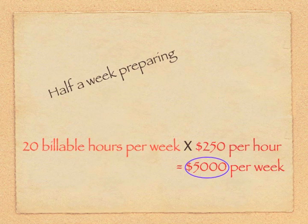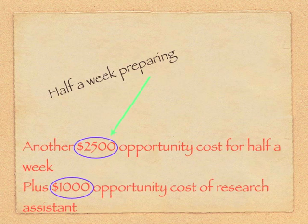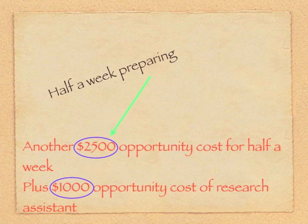And what about preparation for the course? Suppose the preparation takes another half a week, or another $2,500 of consulting income foregone. And it also takes 10 hours of time for a research assistant. The time of the research assistant is another scarce resource that has an opportunity cost. Let's suppose that diverting the research assistant to your project for 10 hours has an opportunity cost of $100 per hour, or $1,000 in total.